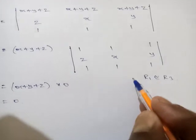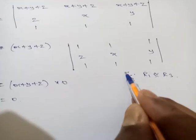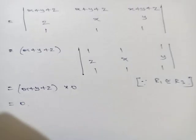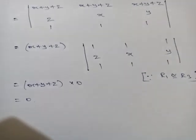So (x+y+z) into 0 means the total value becomes 0. r1 is identical to r3, that is why the determinant value becomes 0.